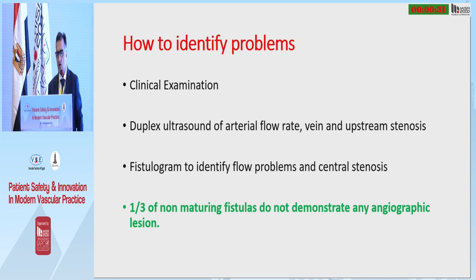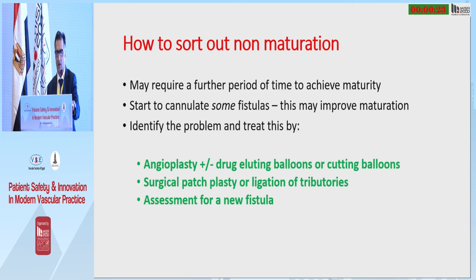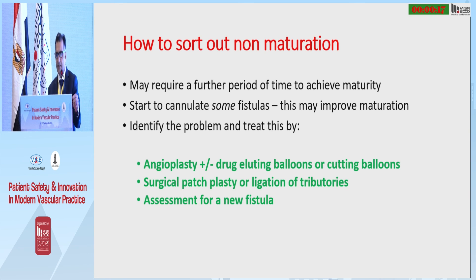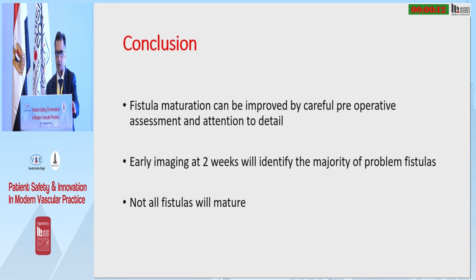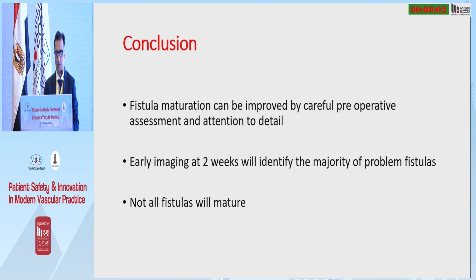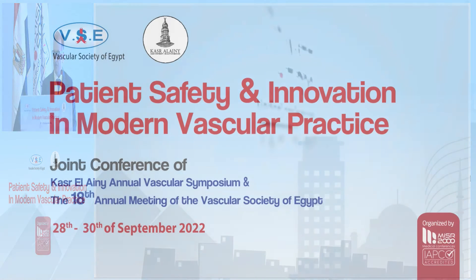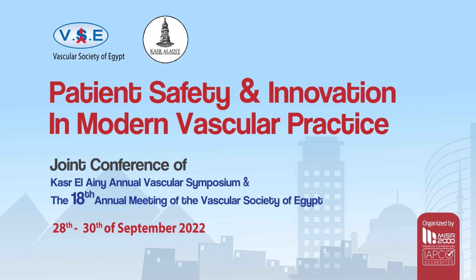Remember, a third of non-maturing fistulas do not demonstrate any angiographic lesion, so you're left with a fistula where you don't know why it's not maturing. You might need to allow a period of time for maturation, cannulate the fistula, and treat identified problems. In conclusion, fistula maturation can be improved by careful preoperative planning and attention to detail. Early imaging at two weeks will identify the majority of problem fistulas, and unfortunately you have to accept that not all fistulas will mature.